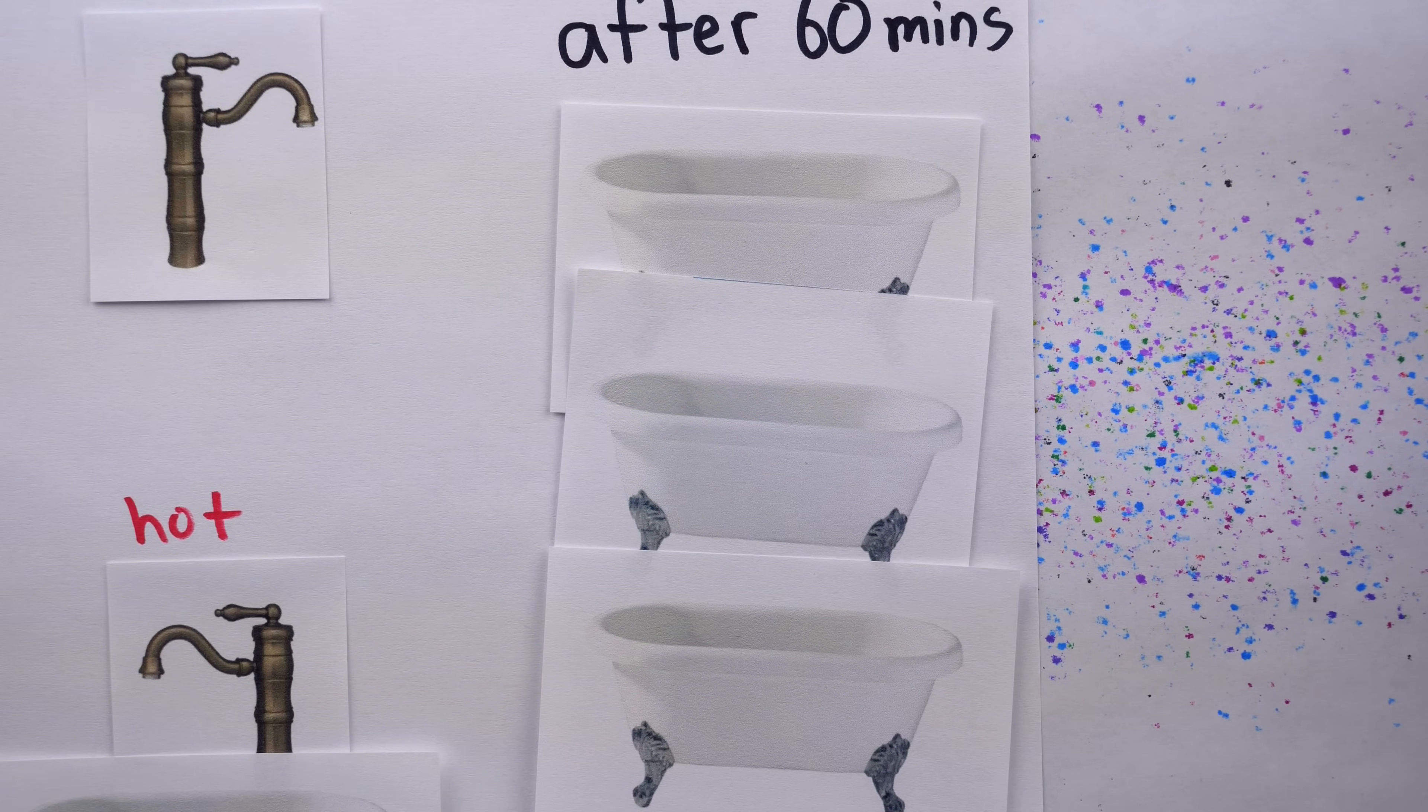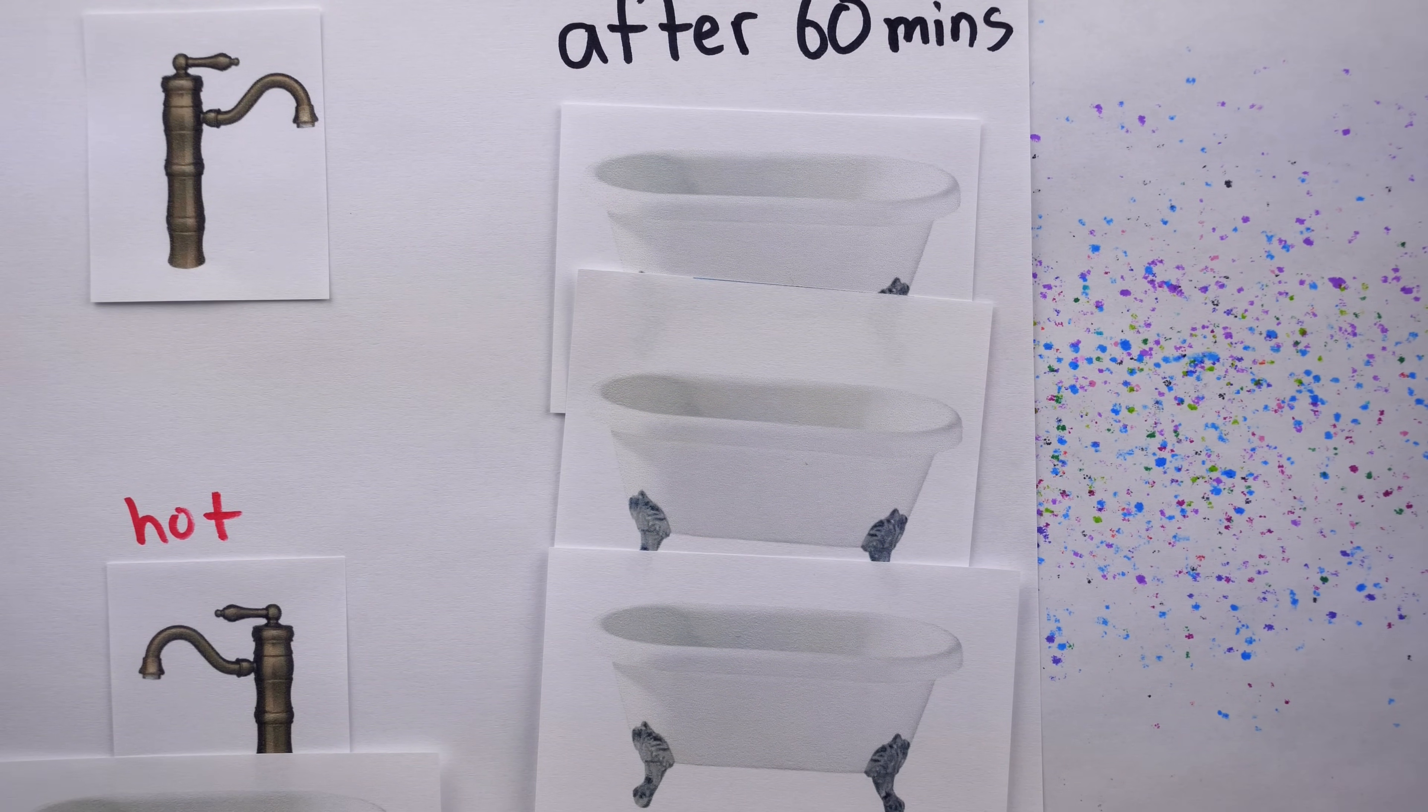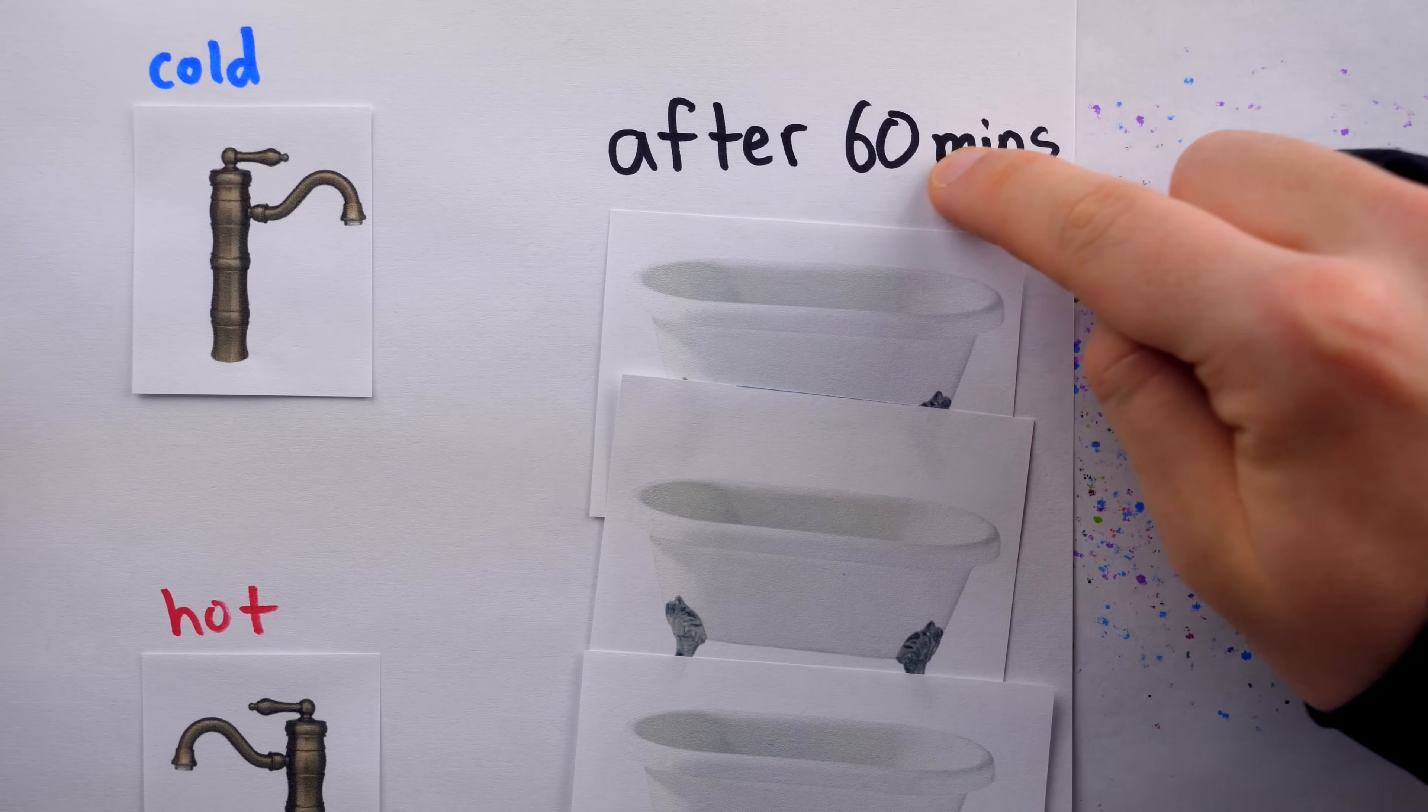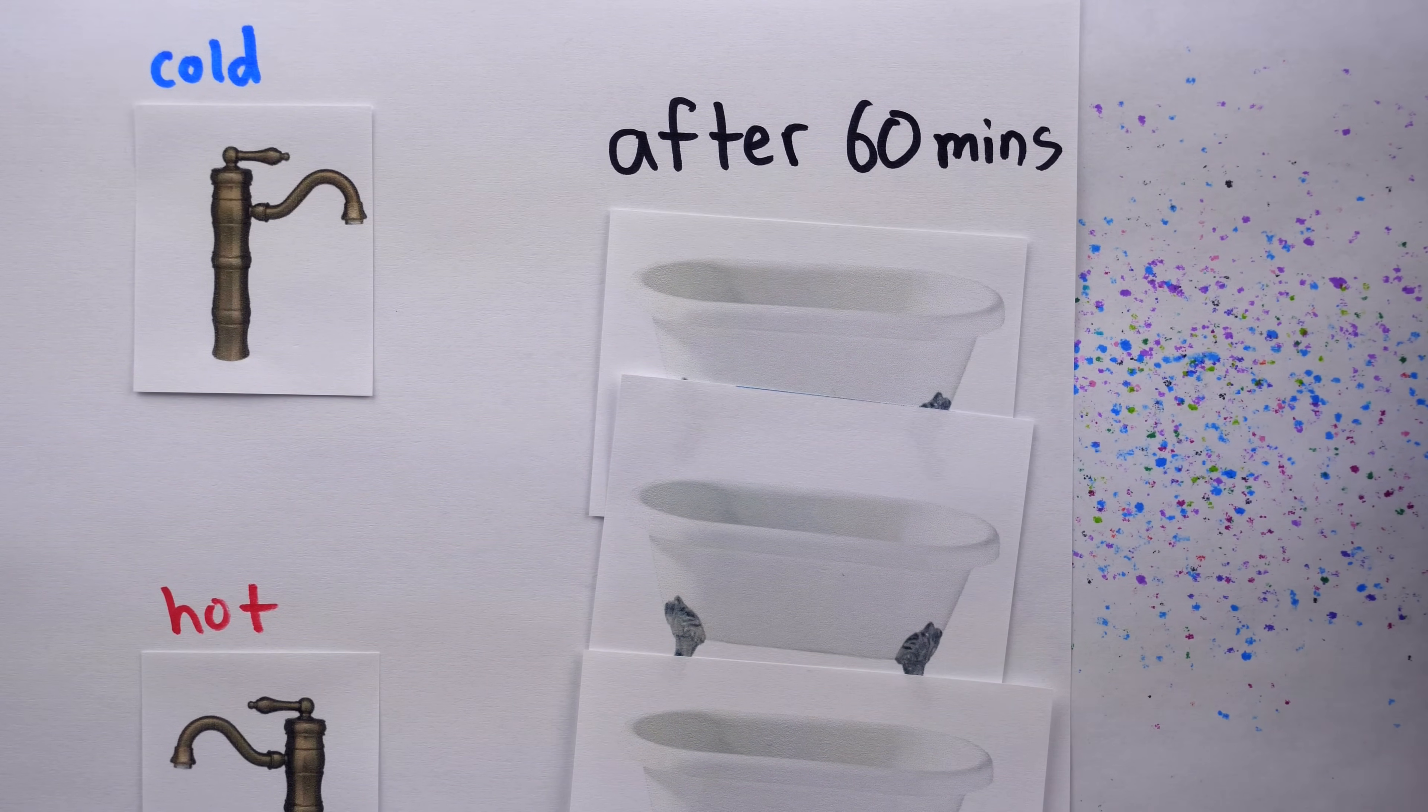So how long to fill up one tub if they're running together? Well just divide 60 by three, thus again we get 20.